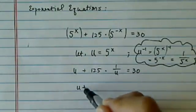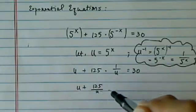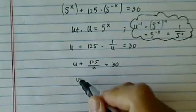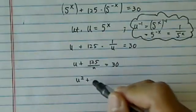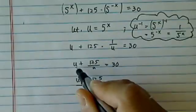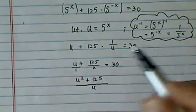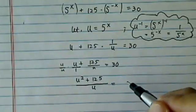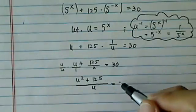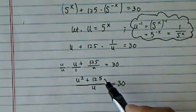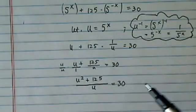We're going to treat this one as finding a common denominator, which is u. We're going to simplify it: u squared plus 125 divided by u, because this is really u over 1. I multiply the top and the bottom with u, so I can combine to get u squared plus 125 divided by u equal to 30.